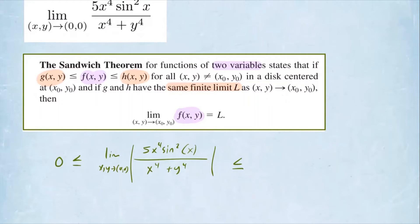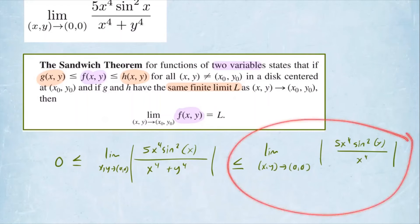Now what I'm going to do is I'm going to delete this term from the denominator so that way I will create this new function. So we have the limit as (x, y) approaches (0, 0) of an absolute value, 5x⁴sin²(x) over x⁴ in absolute value. So all I did is I just eliminated this term. Now the inequality is true. So now let's talk about this limit to the right side.